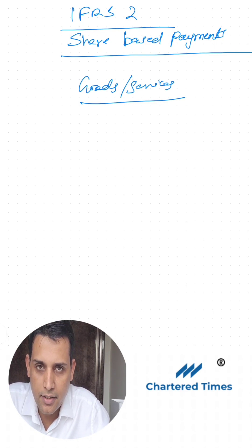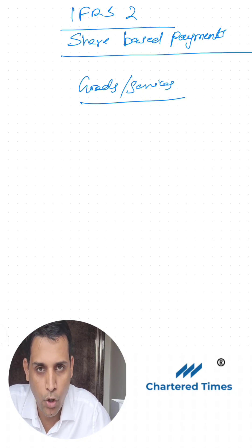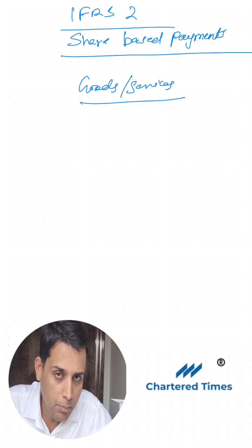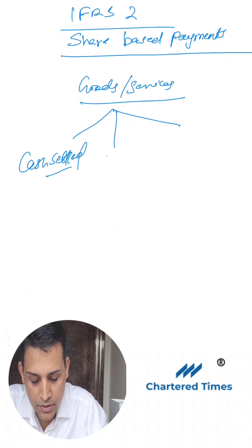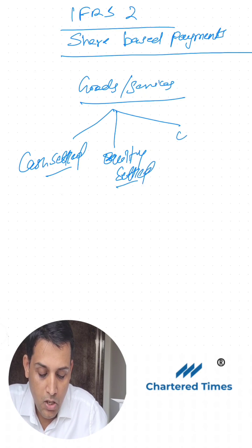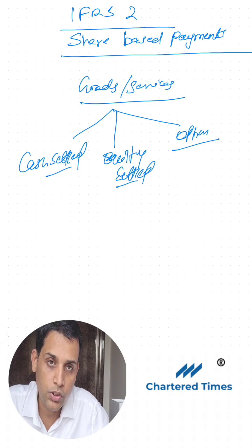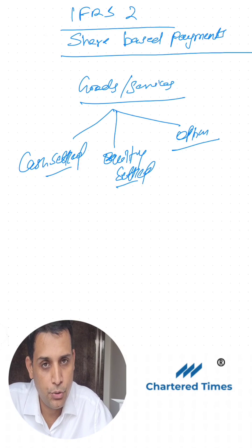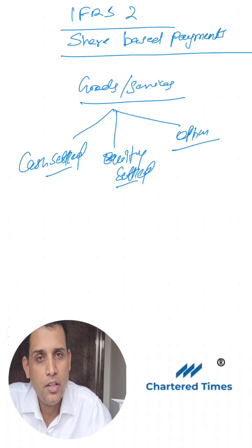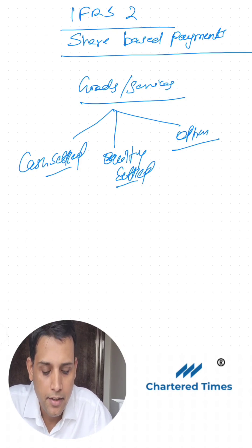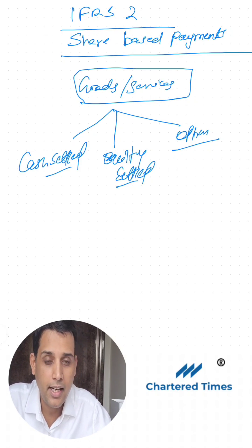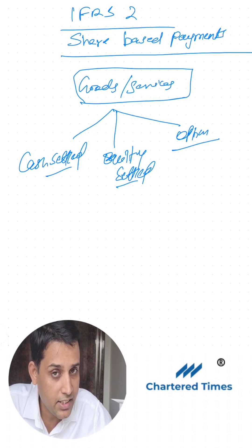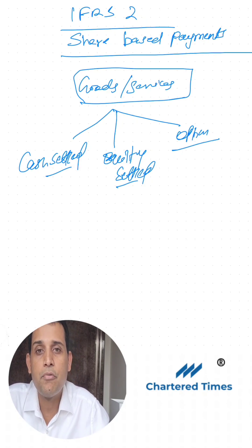When you receive goods or services from a party — a supplier or an employee — you have three payment modes under this standard. First, it could be cash-settled. Second, it could be equity-settled. Third, there could be a choice given to the supplier or employee, or the choice could remain with you, to decide whether to settle in cash or equity when the payment date comes. Usually this involves a commitment to make a payment on a future date, which may depend on certain vesting conditions. Where there are no vesting conditions, the treatment will differ accordingly.